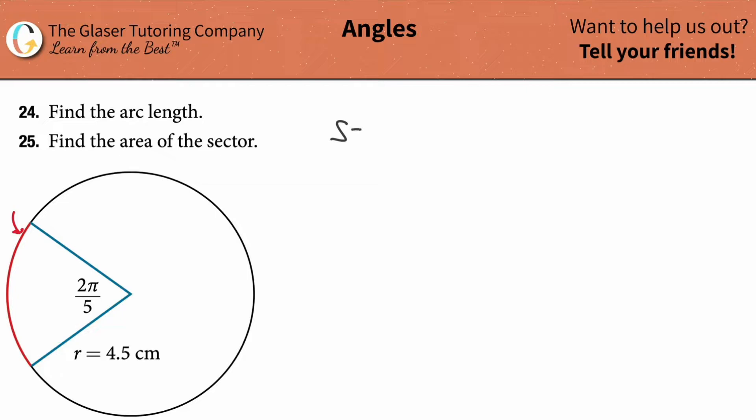Arc length S is equal to the angular measurement between the two radii in radians, multiplied by the value of the radius, which we actually know.